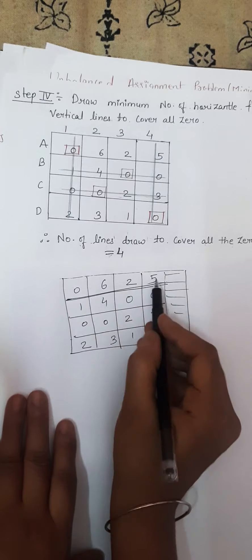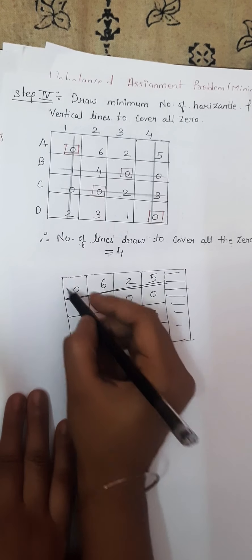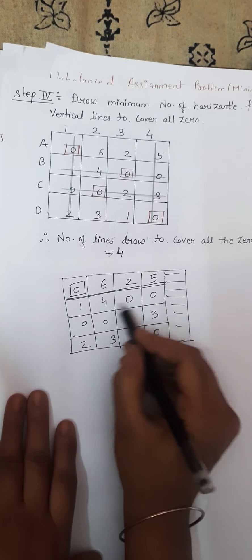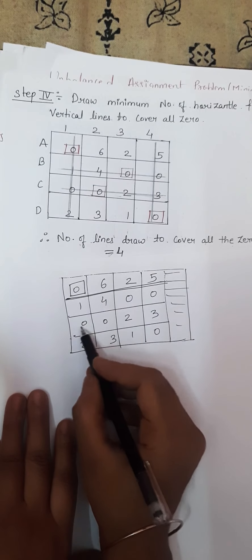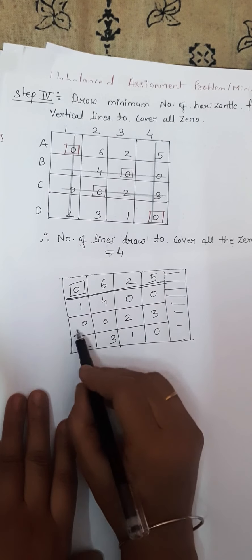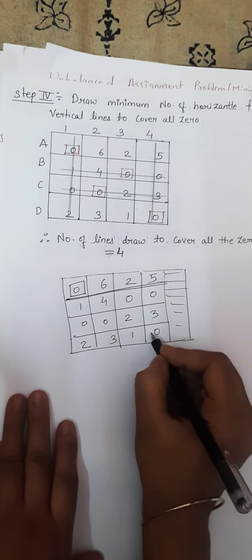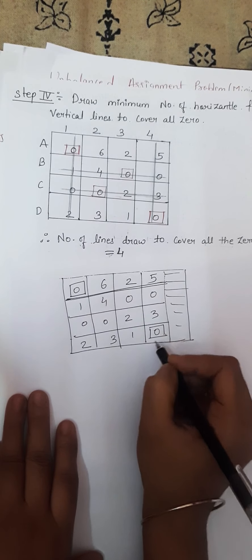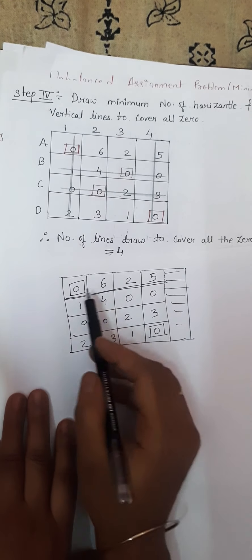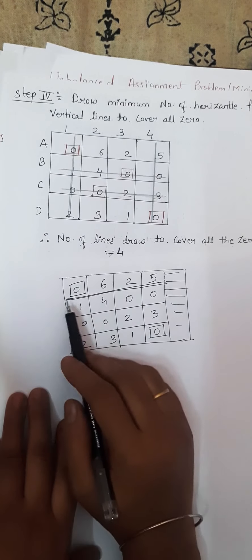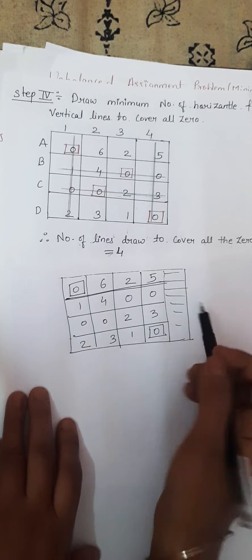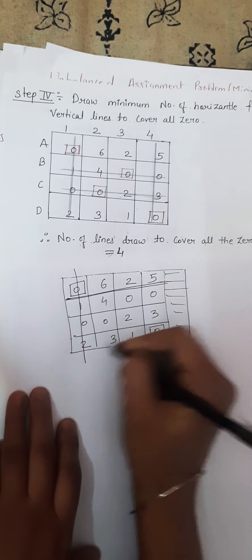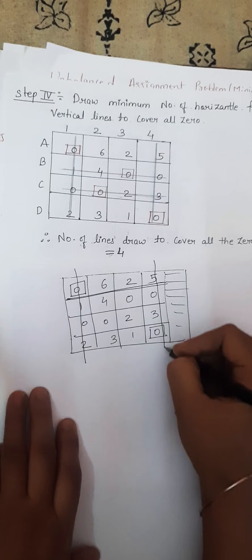Here we have one zero in this row, therefore we allocate it. Here we have two zeros in this row, therefore we skip it. Here we have two zeros in this row, therefore we skip it. Here we have one zero — we allocate it. Now we go for row scanning and draw vertical lines through the allocated cells.